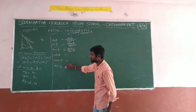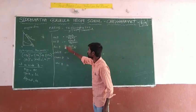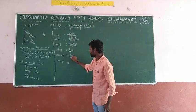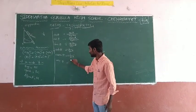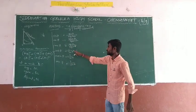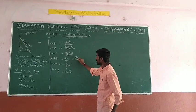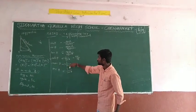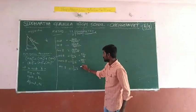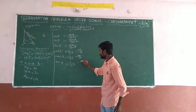The remaining three are reciprocals of the major three functions. Cot is the reciprocal of tan, that is 1 by tan theta, which gives adjacent by opposite. Cosec is the reciprocal of sin, that is 1 by sin theta, which gives hypotenuse by opposite. Sec is the reciprocal of cos, that is 1 by cos theta, which gives hypotenuse by adjacent. These are all six trigonometric ratios: sin, cos, tan, cot, cosec, and sec.